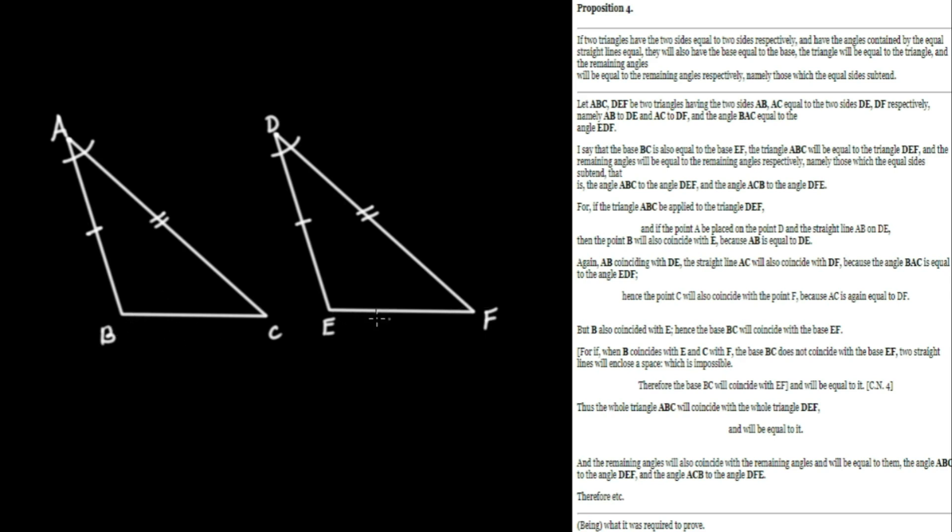is also equal to the base EF. And the triangle ABC will be equal to the triangle DEF and the remaining angles, namely this one over here, with respect to this one, and C over to F. That these angles will be equal to the remaining angles respectively, namely those which the equal sides subtend.